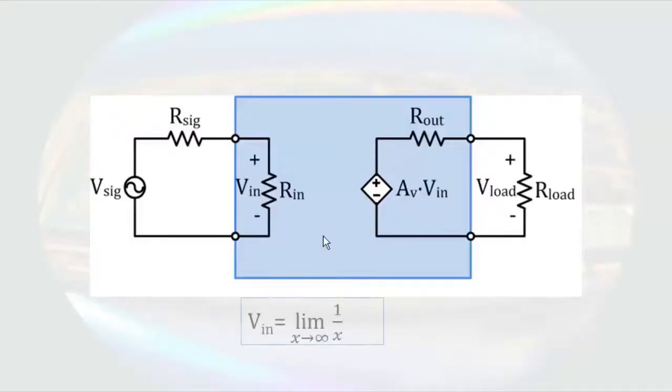What about the gain of the dependent source? Well, that may be a little more abstract. In an ideal amplifier, we would get something at the output no matter how small the input signal might be. The smallest signal I could think of would be something like this: the input voltage never quite gets to zero, but does become vanishingly small. In order to get any output voltage in this case, there's only one possible value for the gain of the dependent source, and that is infinity.